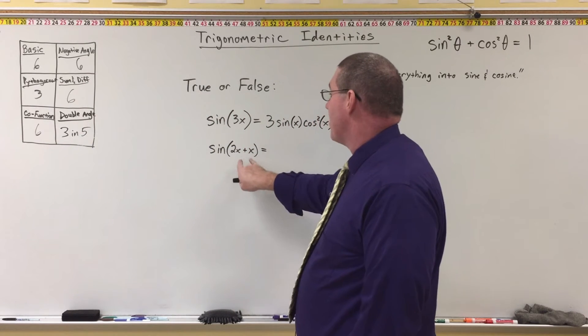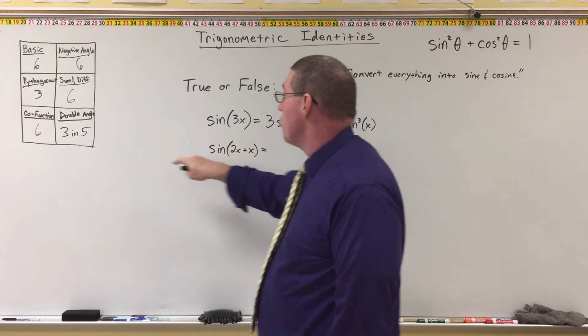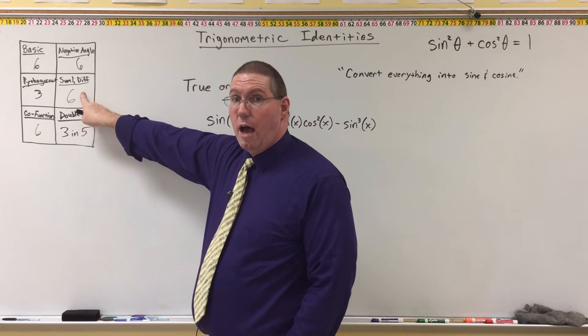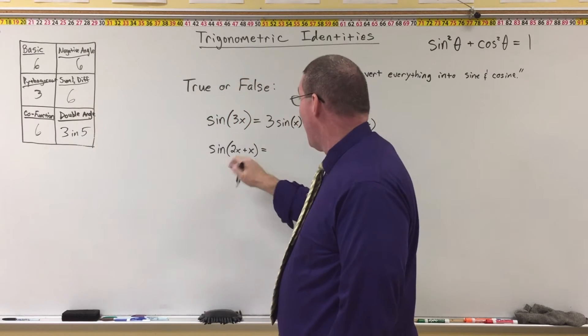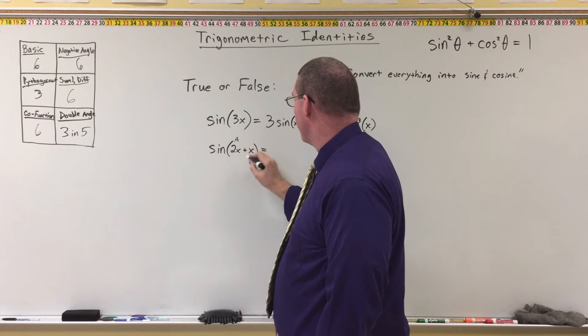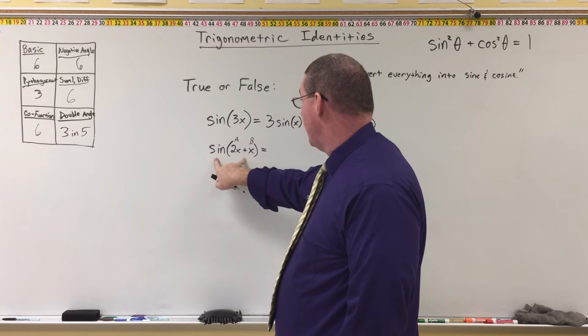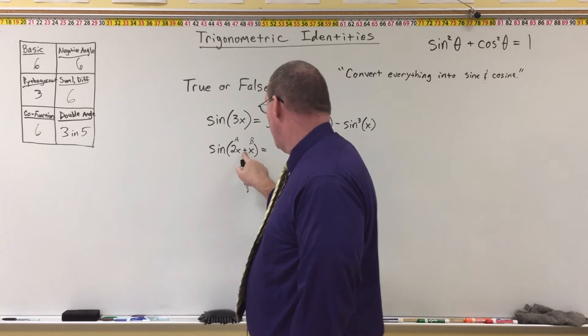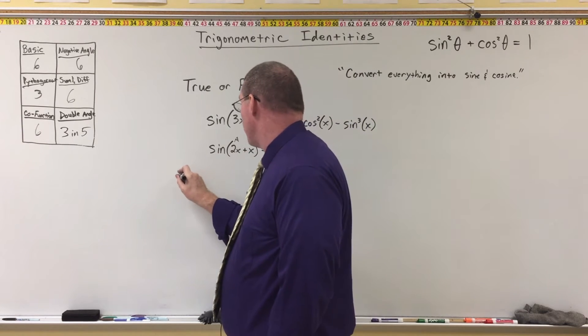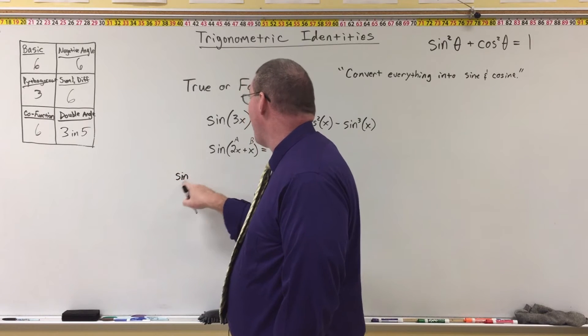So here's what I want to show you. 2x plus x, that's a sum, right? So we can use one of the sum formulas. We can use sine of a plus b on this, where a is 2x and b is just x. And so, the sum identity for a sum goes like this. Sine of a, which in this case is